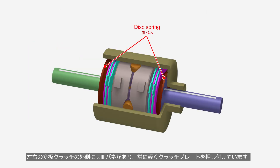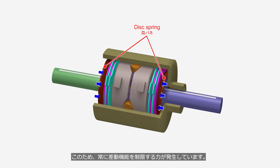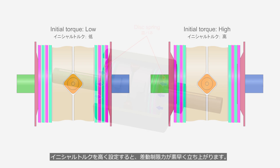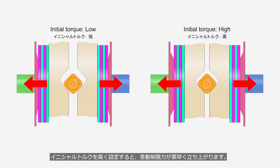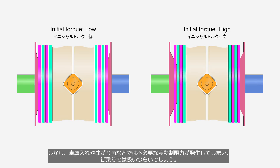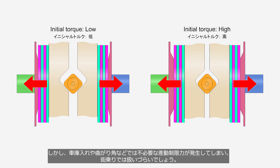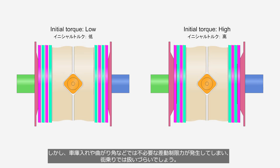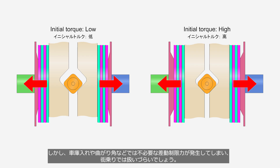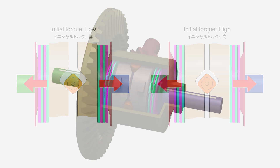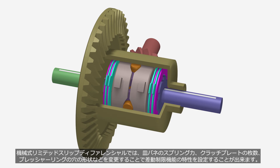Disc springs installed outside the left and right multi-plate clutches lightly press the clutch plates at all times, constantly generating a force that restricts the differential function — this force is called the initial torque. When initial torque is set higher, the differential limiting force builds up more quickly. However, during parking maneuvers or low-speed cornering, unnecessary limiting force is generated, making the vehicle harder to handle in city driving. The characteristics of the differential limiting function can be set by changing the spring force of the disc springs, the number of clutch plates, and the shape of the holes in the pressure rings.